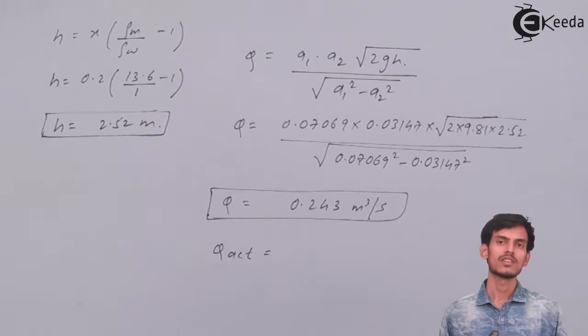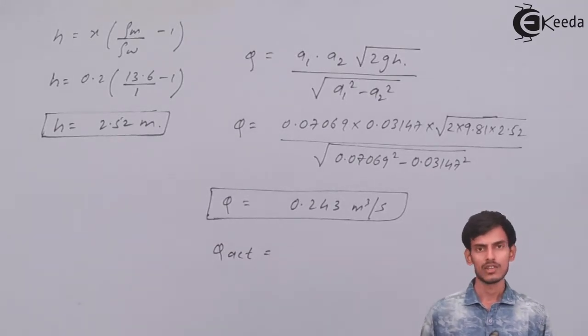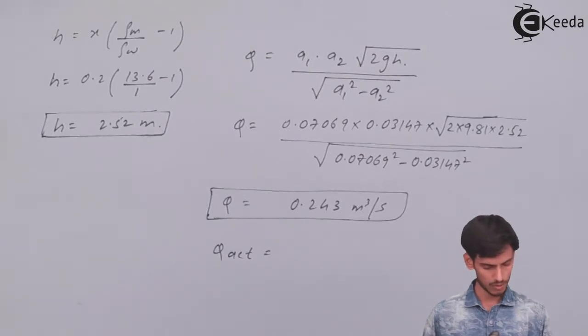So the value of discharge that you get through the formula is the theoretical discharge. And the actual discharge is when you multiply it with the coefficient of discharge which is given as 0.98.